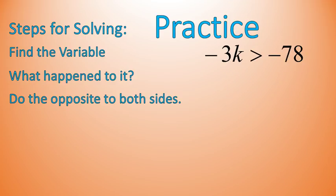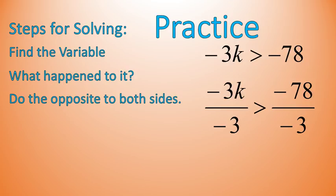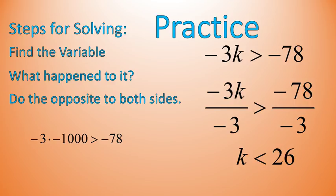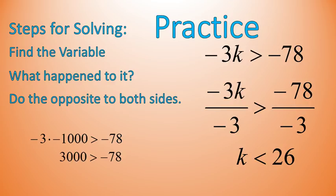One more practice question: negative 3k is greater than negative 78. We are going to divide both sides by negative 3. Because we're dividing by a negative number, we switch the sign — it changes from greater than to less than. So k is less than 26. I'm going to pick the number negative 1,000 for the check. Negative 3 times negative 1,000 gives me positive 3,000, and that is definitely greater than negative 78 — it checks out.